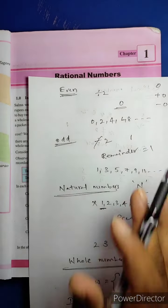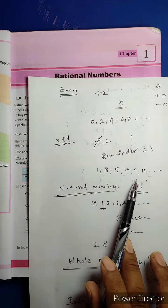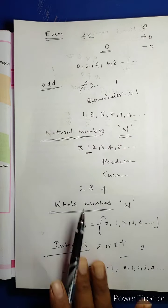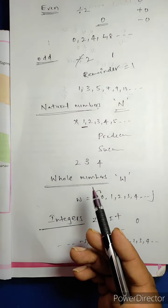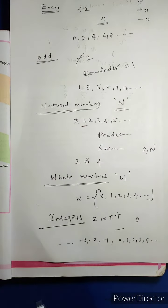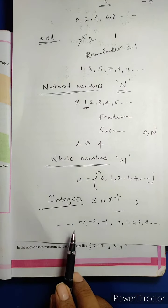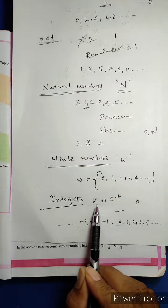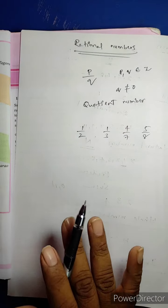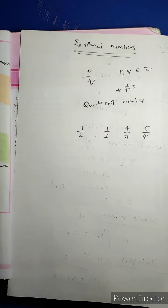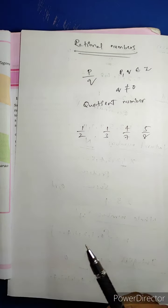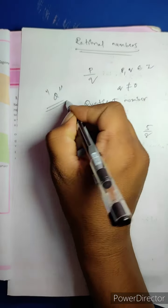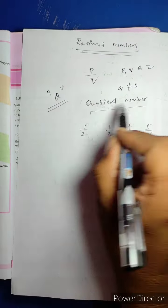One more time recap: Even numbers are 2, 4, 6, 8, and so on. Odd numbers are 1, 3, 5, 7, 9, 11, and so on. Natural numbers are 1, 2, 3, 4, 5, 6, and so on. Whole numbers include 0 and natural numbers. Integers include negative numbers, positive numbers, and 0, denoted by Z or I. Rational numbers are in the form P/Q where P and Q are integers and Q ≠ 0, denoted by Q, also called quotient numbers.